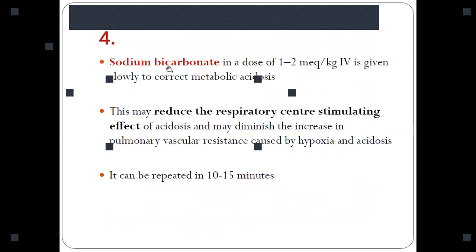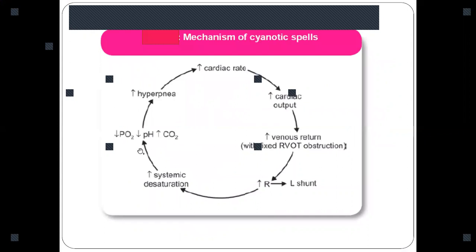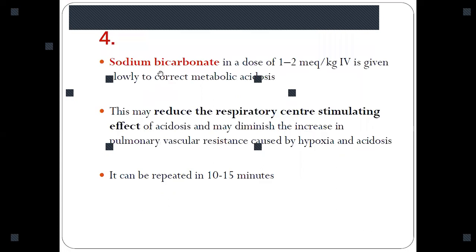Next is sodium bicarbonate. One of the mechanisms of cyanotic spells is hypoxia and acidosis. If you correct the acidosis, this cycle of hyperpnea, increased cardiac rate, all these things can be reversed. You should correct acidosis by giving sodium bicarbonate at a dose of 1 to 2 milliequivalents per kilogram.